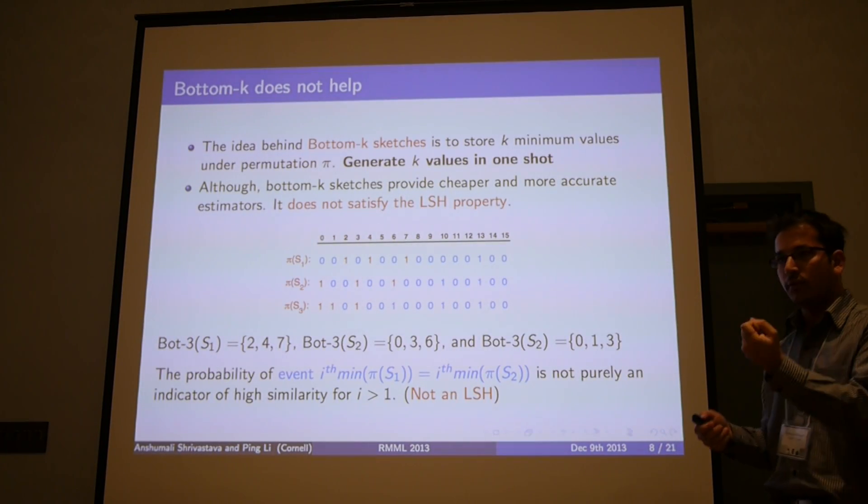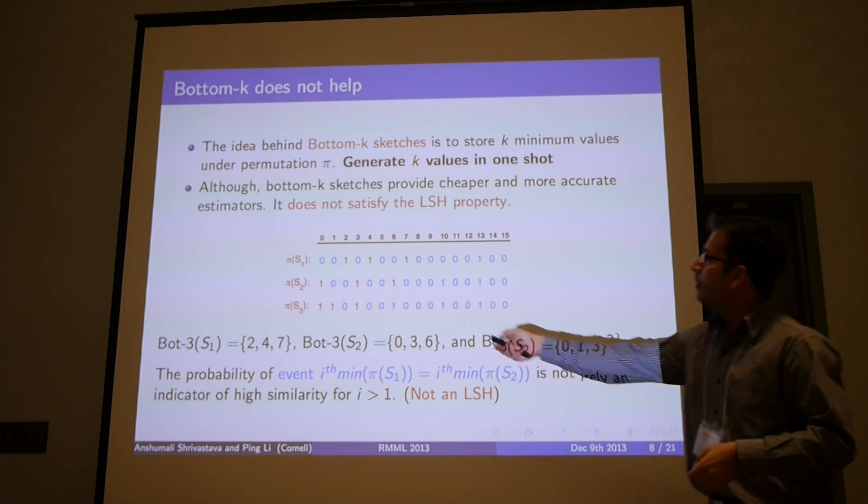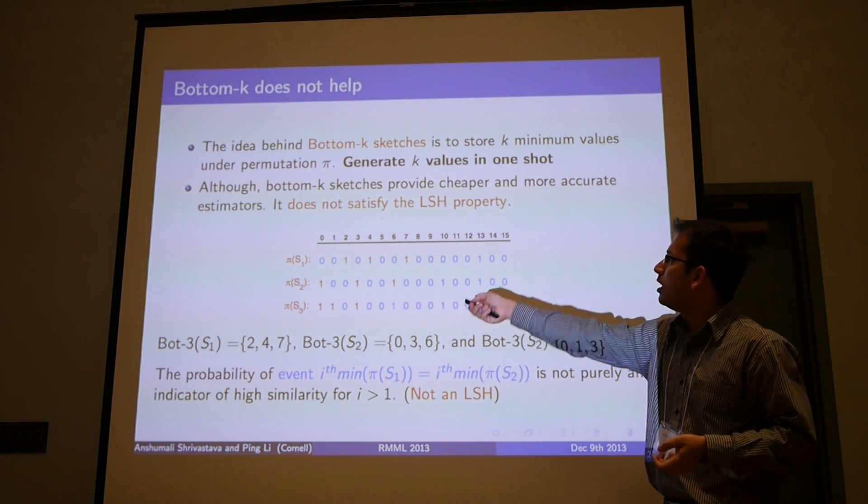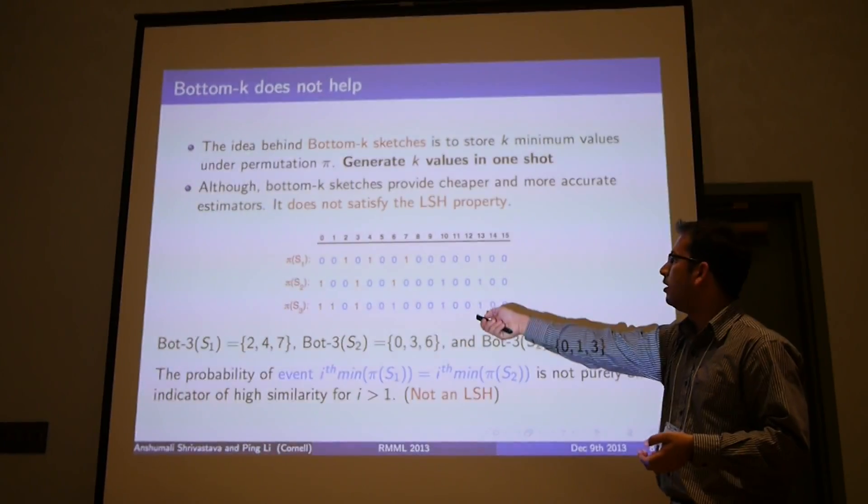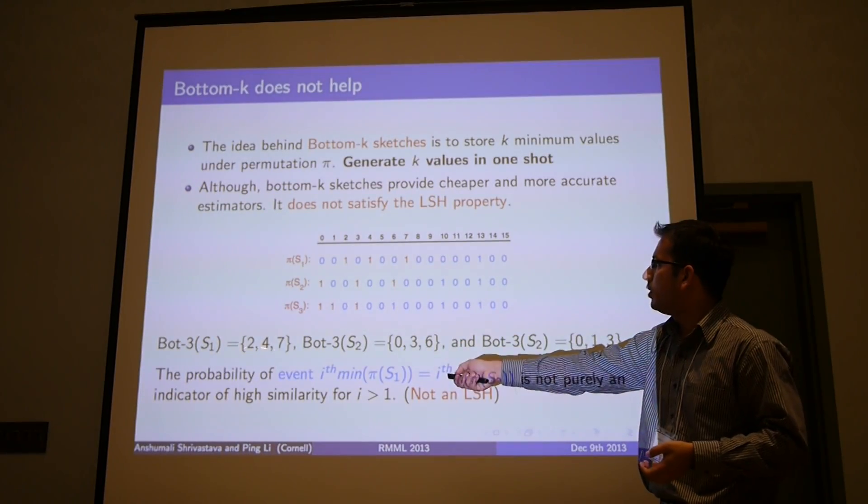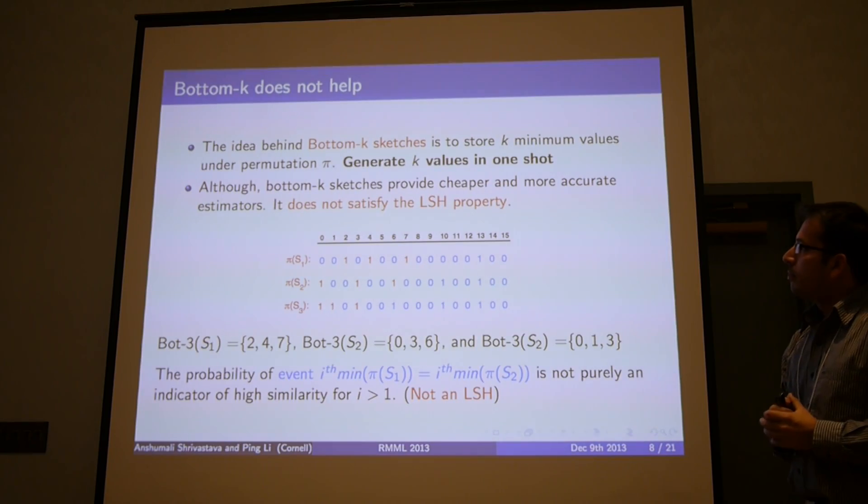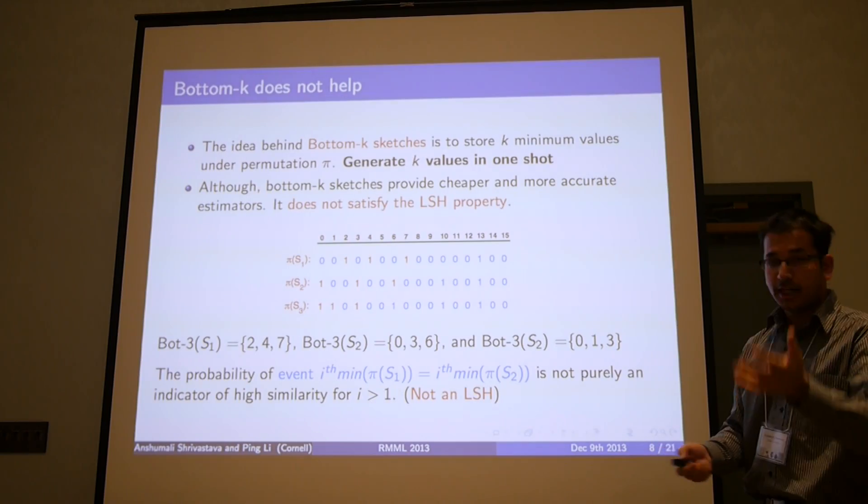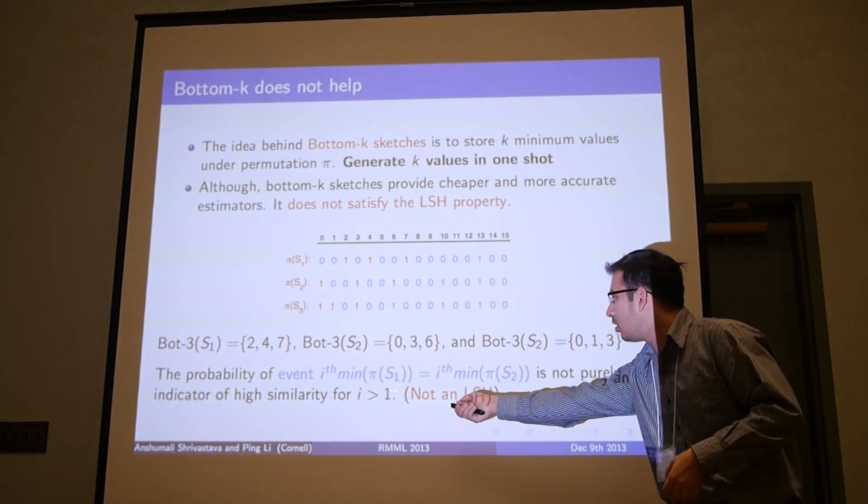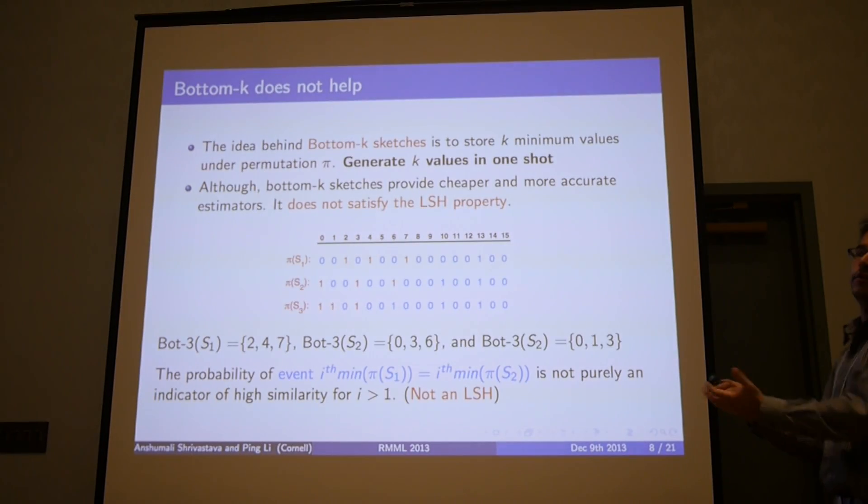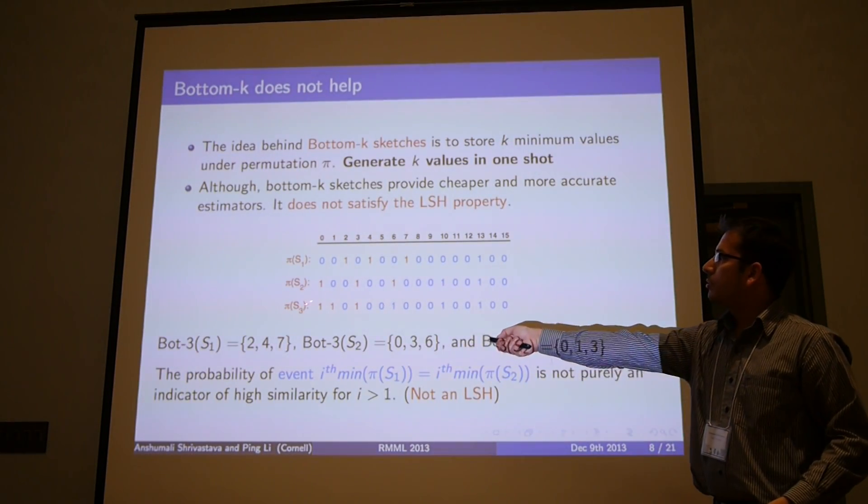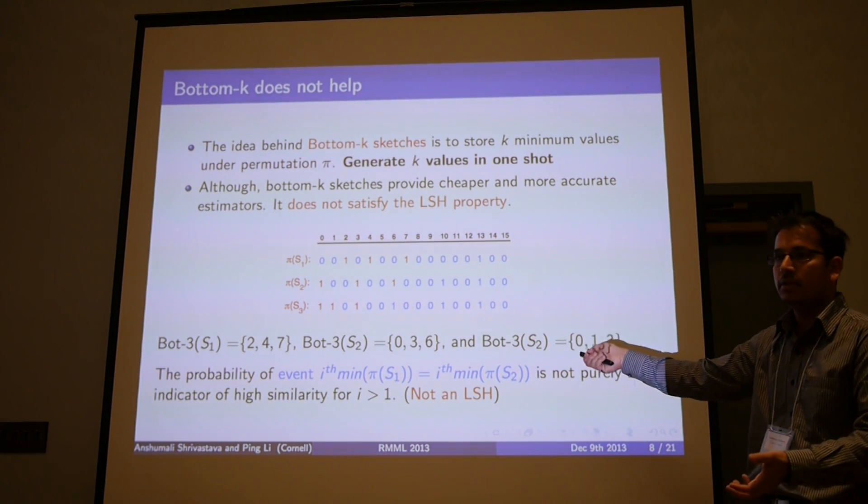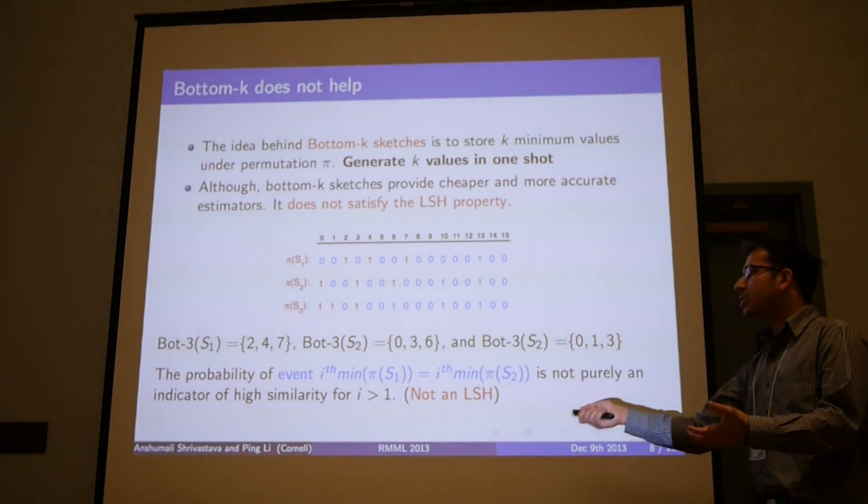The idea was to, instead of using one minimum, just use k different minimums. For example, if we remember that we used only the first index of first non-zeros, here we can use, say for example, here we are using 3. So for my bottom 3 sketch for S1 will be 2, 4, 7, and similarly S2 and S3. But this cannot be used for the process that I have showed you for constructing near-neighbors or for constructing tables for near-neighbor search. It is because the collision does not imply, is not an indicator of high similarity. For example, if we see S2 and S3, they are almost identical except at this point. There is a collision here, but there is no collision afterwards. So it does not satisfy that LSH property.